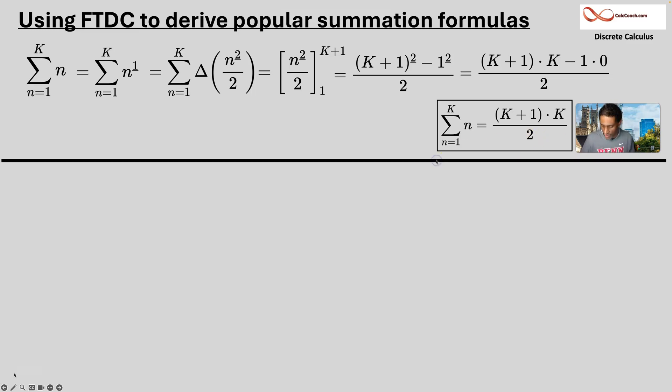All right. Let's do it again for the sum of the n squares. Replace n squared with what it is in terms of falling powers. N falling two plus n falling one. We can break that summation up into two.